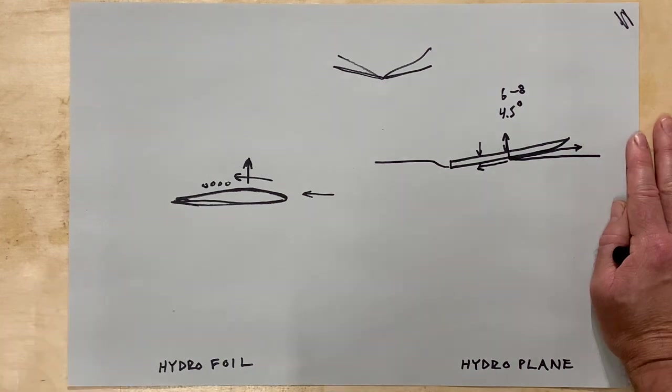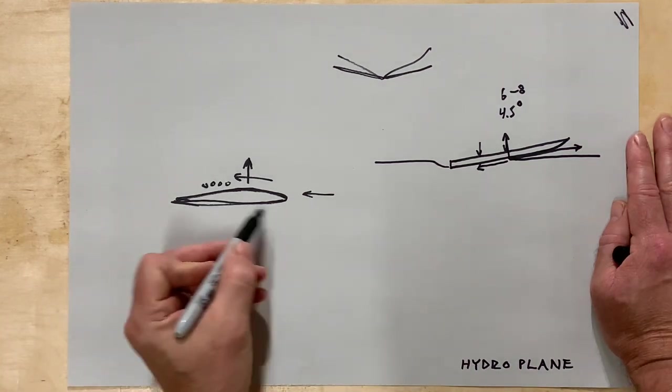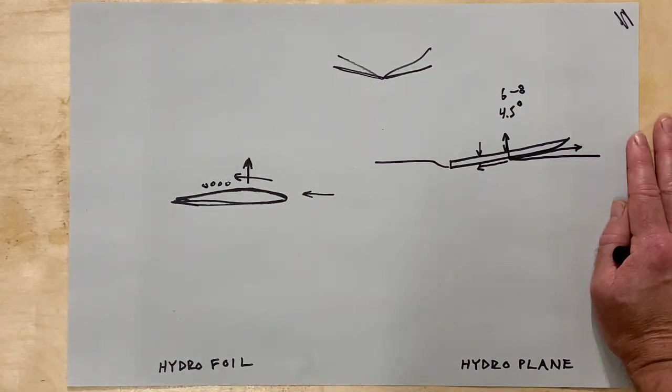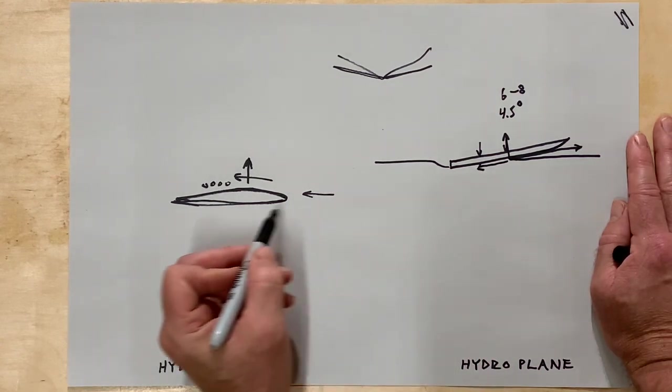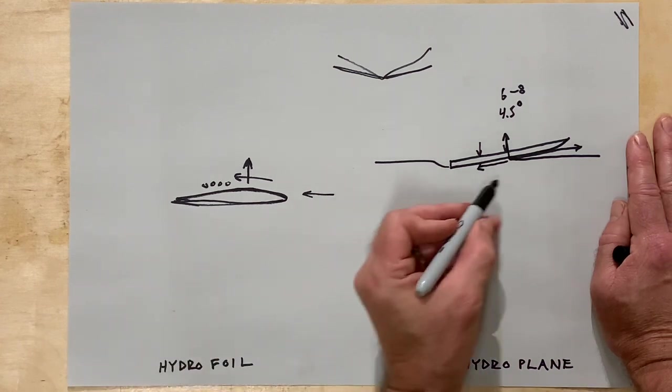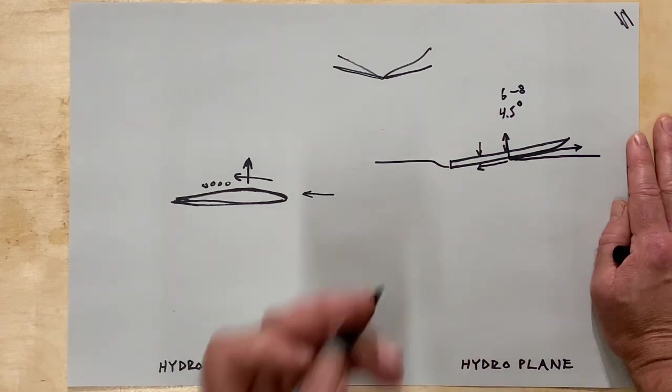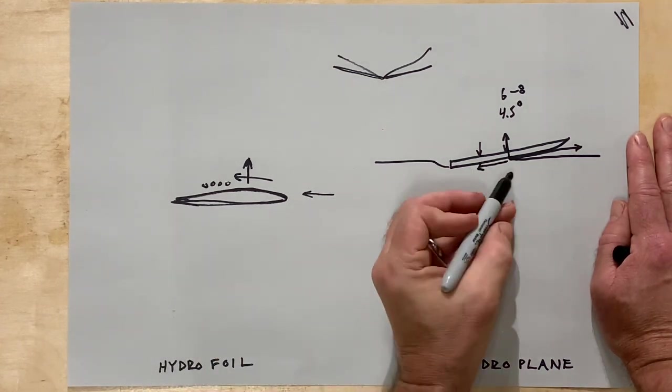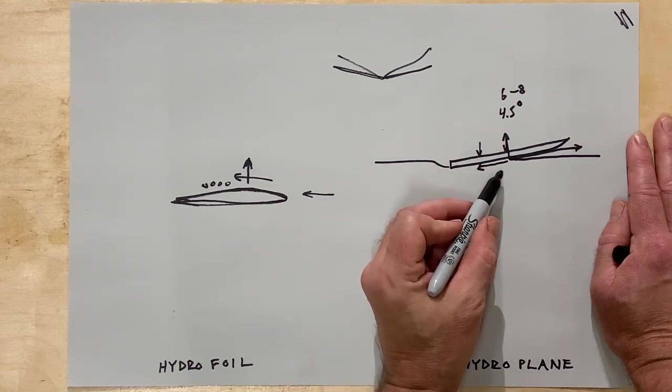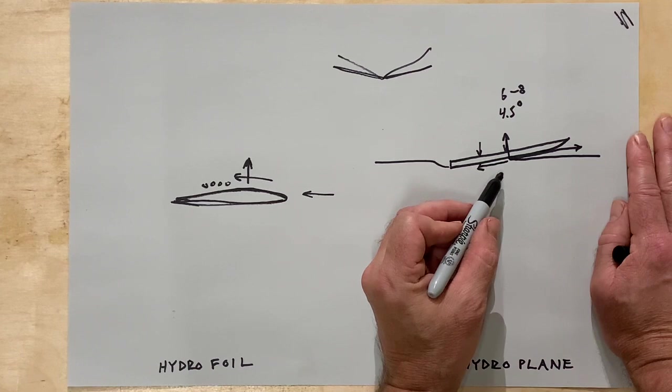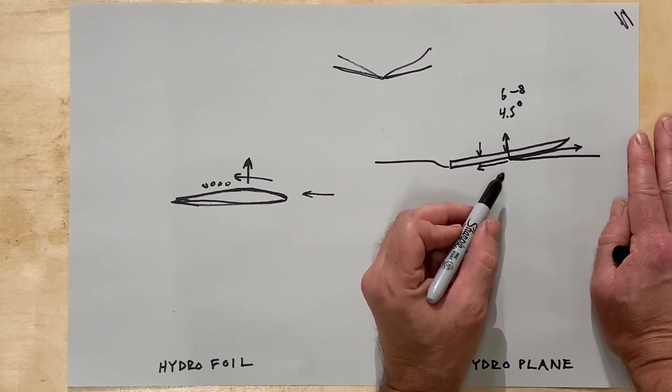Now the difference between a hydroplane and a hydrofoil is this only has one surface in contact with the water. And as the speed increases on a hydroplane, the lift increases.